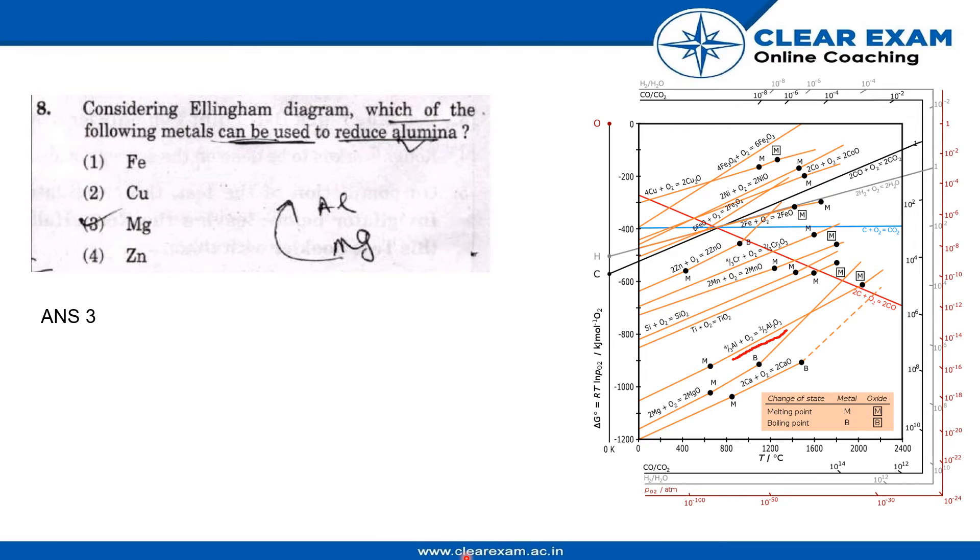So you can see Fe is here, which is above this line, and Co is here. So it is also not the one. And Zinc is here. But Magnesium is below this.